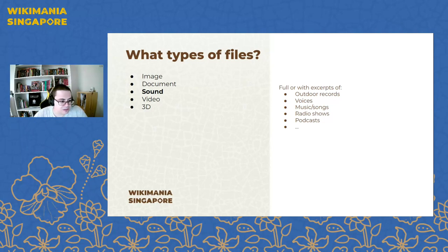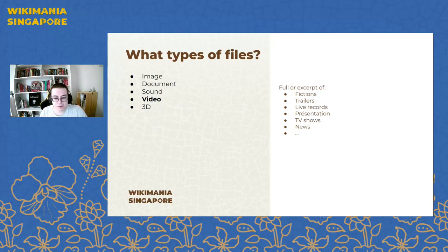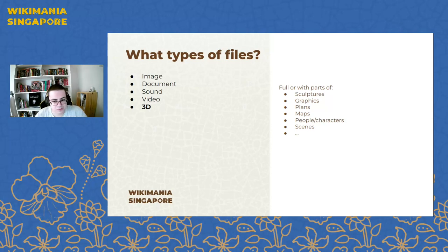We also have video files — for example, except for fiction: trailers, live records, presentations, TV shows, movies, and similar things. And finally we have 3D files, which can include full or partial cultures, graphics, plants, maps, people, characters, and scenes.